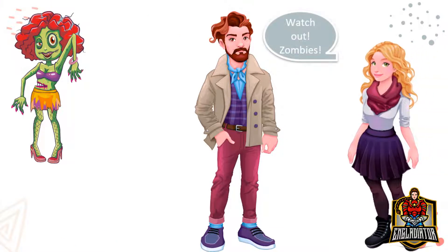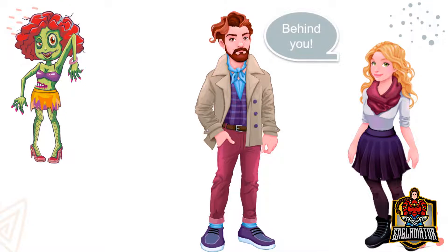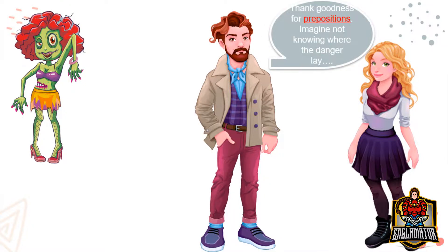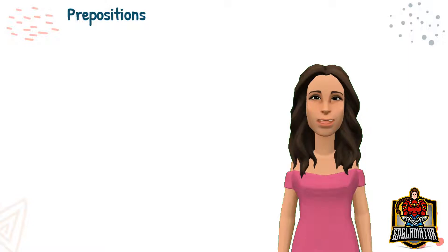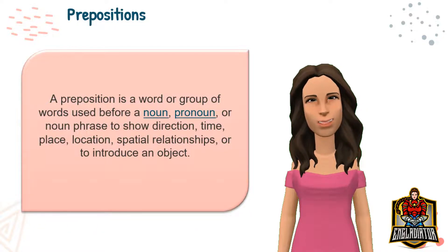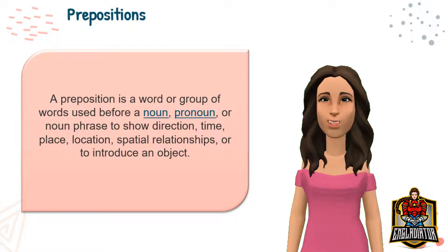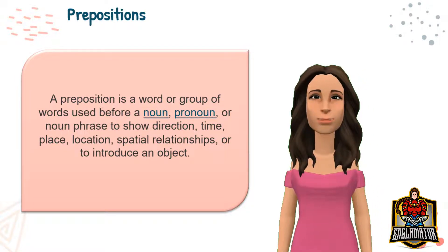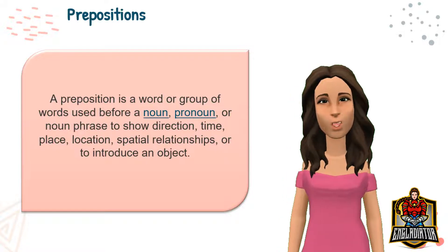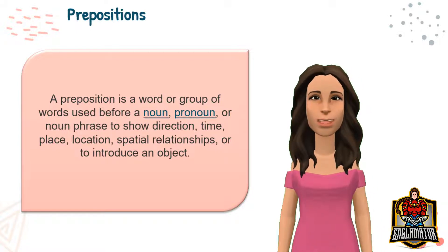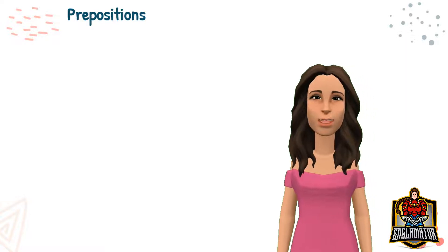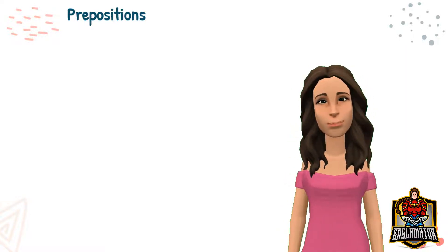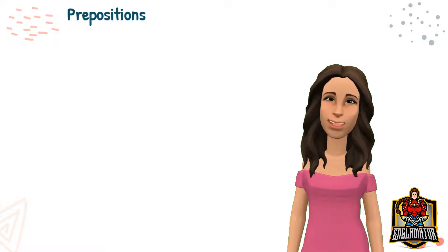Watch out — zombies — they're behind you! Thanks goodness for prepositions. Imagine not knowing where the danger lay. A preposition is a word or group of words used before a noun, pronoun, or noun phrase to show direction, time, place, location, or spatial relationship, or to introduce an object. Prepositions tell us where or when something is in relation to something else.